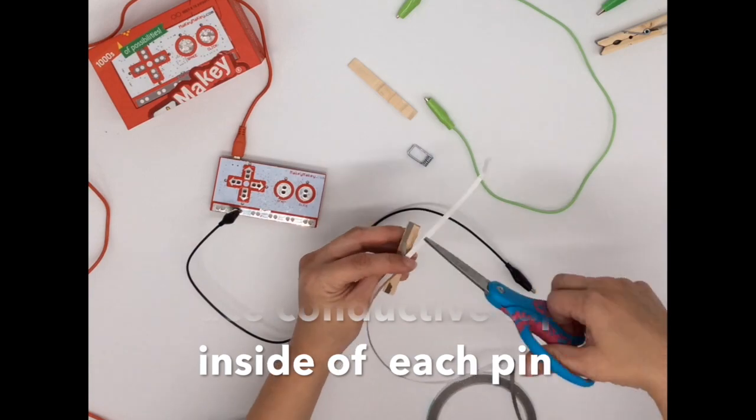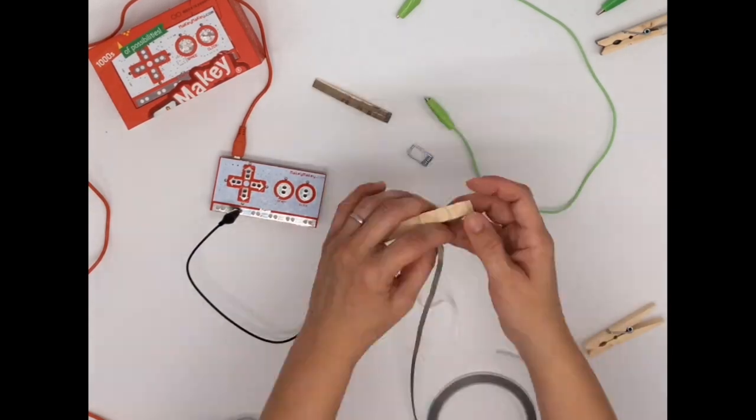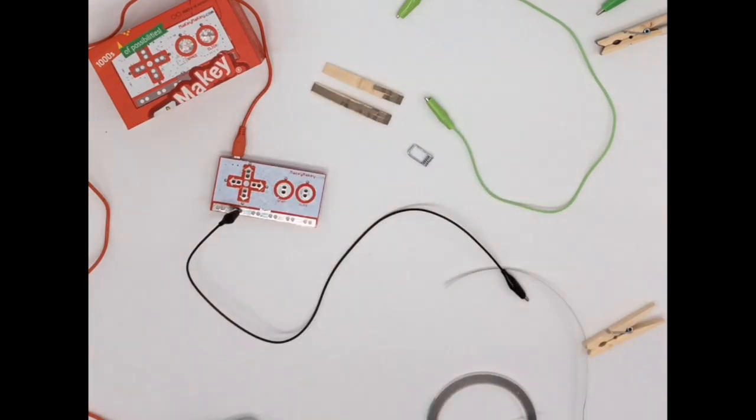And you'll want to go all the way to the end on one side so that you'll be able to clip your alligator clip to it. On the other one you'll just want to wrap on the inside of the teeth of the clothespin and then you put it back together.